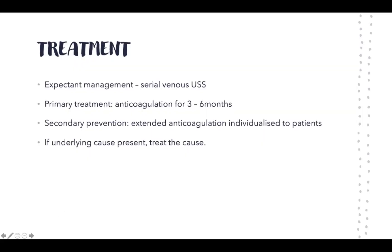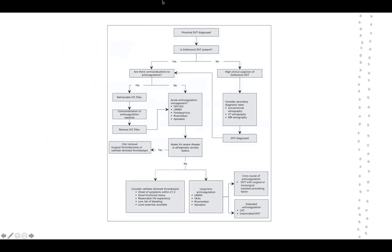For treatment, in certain uncommon circumstances — such as a distal DVT that is asymptomatic and assessed as unlikely to cause complications — we can manage expectantly with serial venous ultrasound of the lower leg, monitoring over coming weeks to months. Usually, however, we begin primary treatment with anticoagulation for three to six months, typically three months. For secondary prevention, anticoagulation may be extended depending on patient factors and history. If there is an underlying cause, we treat that cause.